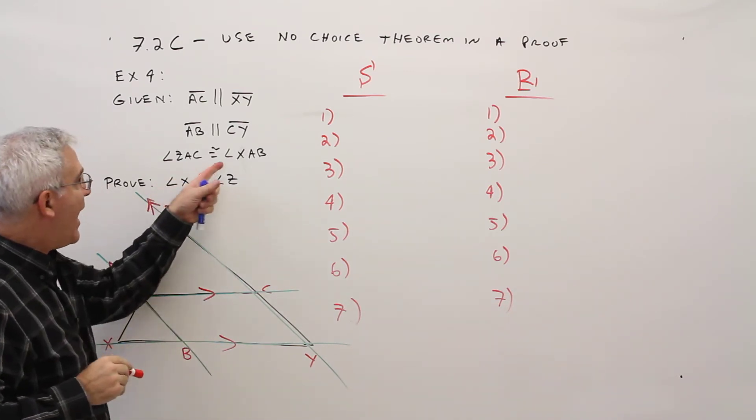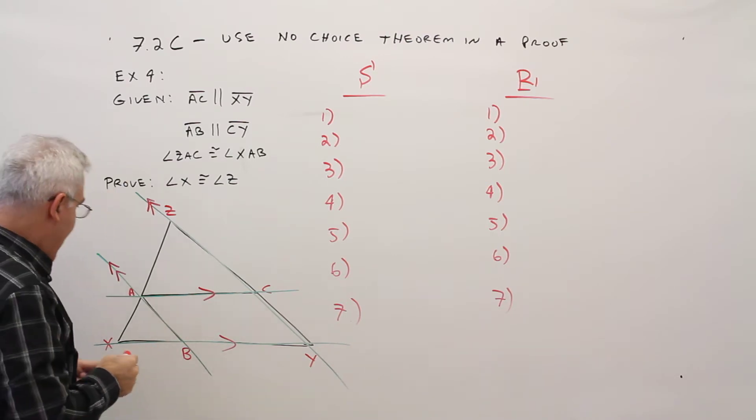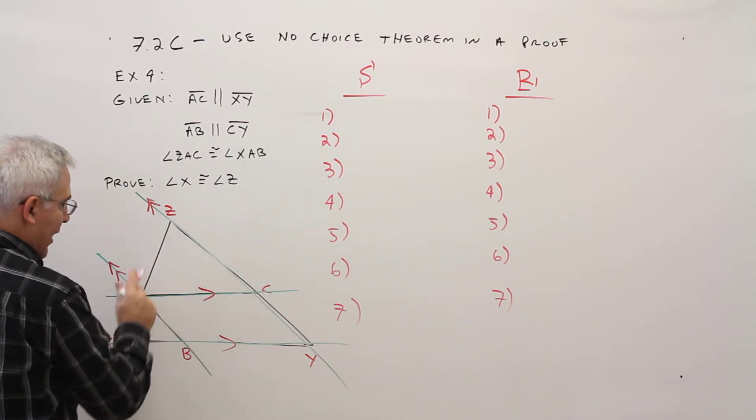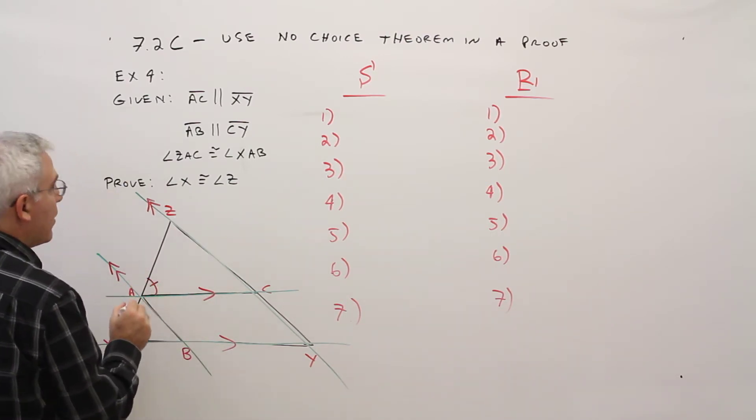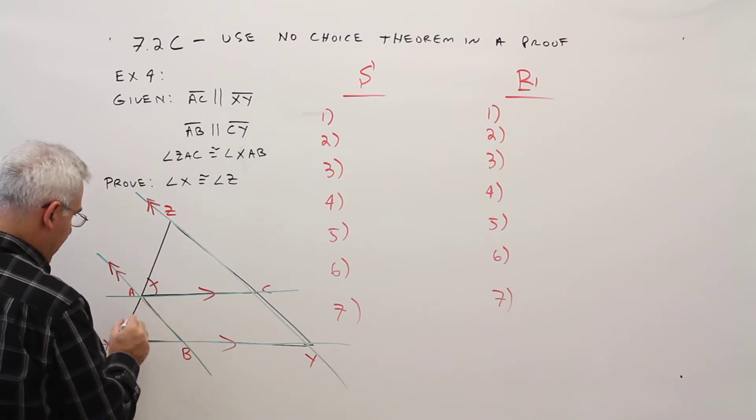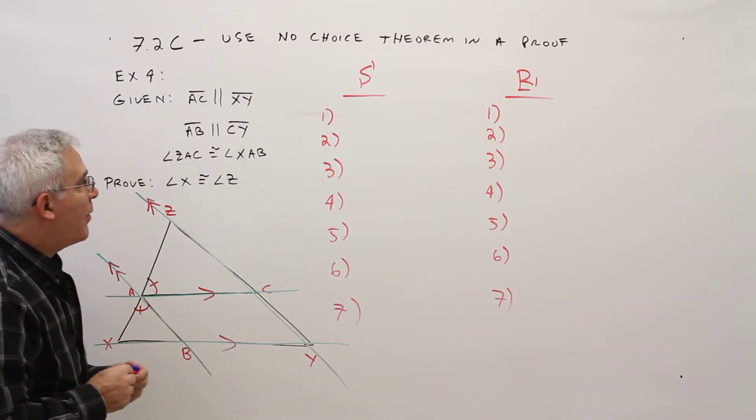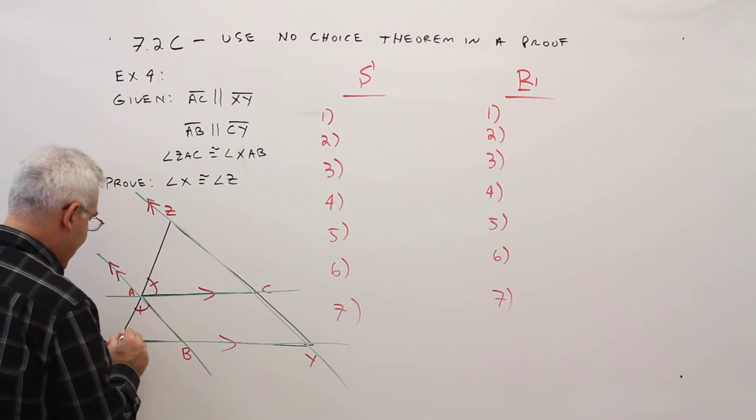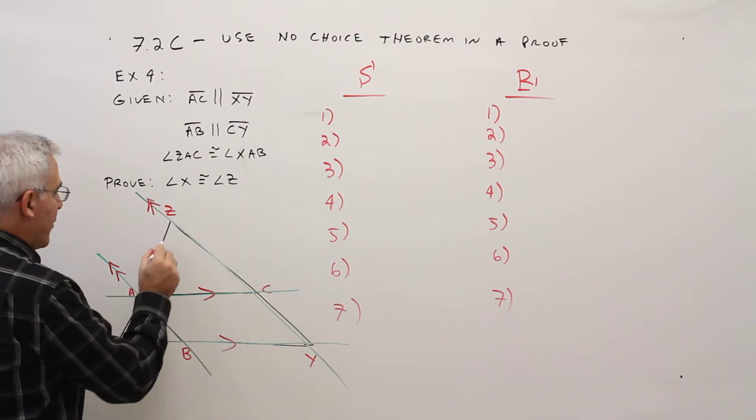And angle ZAC is congruent to angle XAB. Prove that angle X is congruent to angle Z.